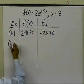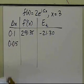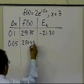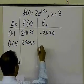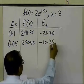If I choose 0.05, which is half of what I have now, I get 280.43, and the true error now in this case is minus 10.38.